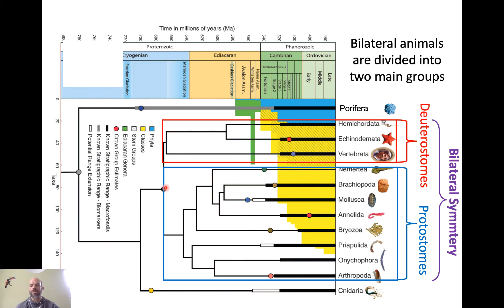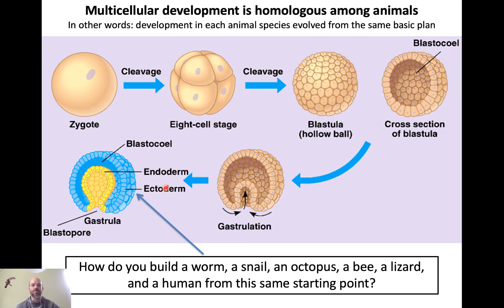Development is a really important innovation in the evolution of animals. We were already talking about the development of blastulas and gastrulas, which is homologous among all animals. Now let's think about how you build a worm, or a snail, or an octopus, or a bee, or a lizard, or a human from the same starting point — because all of those animals share the same developmental progression. How do you get all that diversity of animal anatomy with the same overall developmental plan?